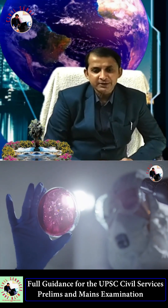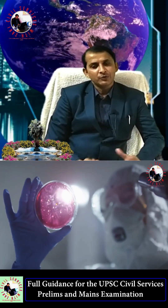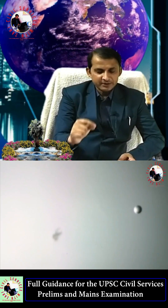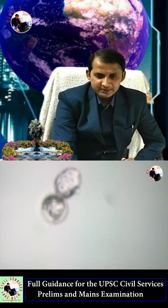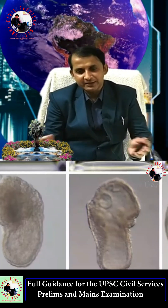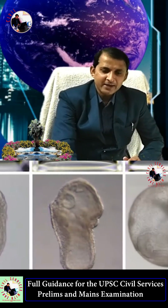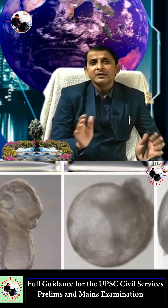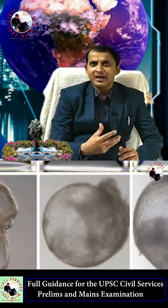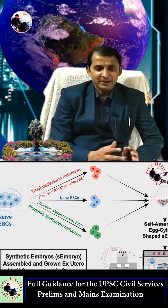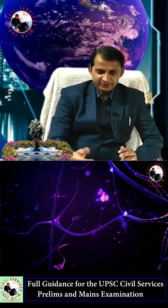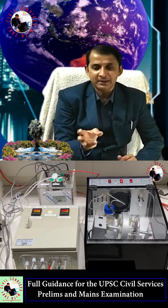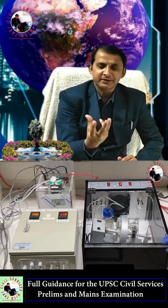No sperm and no fertilization is used — only skin cells from a mouse. These skin cells are divided under special conditions and develop into this type of embryo, similar to an artificial womb replicating the natural conditions found in the uterus.